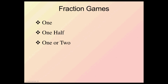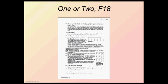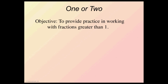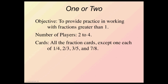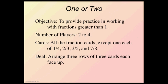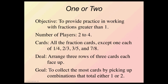The next game we're going to play is called one or two. This is game F18, so it's a little bit more complex. And our objective is to provide practice in working with fractions greater than one, two to four people again. We're going to use all the fraction charts except one of each of these listed here. And we're going to arrange three rows of three cards each, face up. So we're creating a grid. And our goal is to collect the most cards by picking up a combination that totals either one or two. And again, trying to gather as many cards as possible.